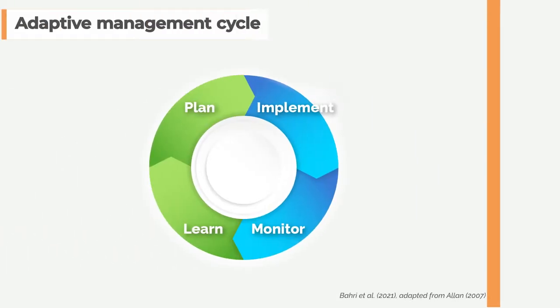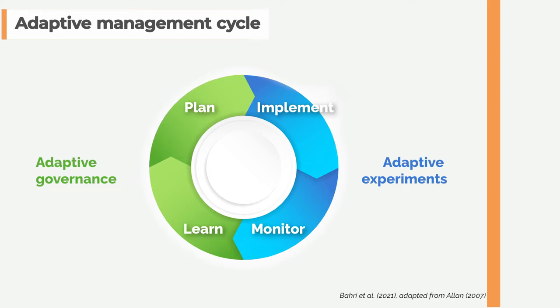Here we can see a visual representation of the adaptive management cycle. The use of adaptive experiments involves a structured trial-and-error process of implementing activities and monitoring to find out what works and what doesn't. Adaptive governance involves using the outcomes of these adaptive experiments in the subsequent planning phases.